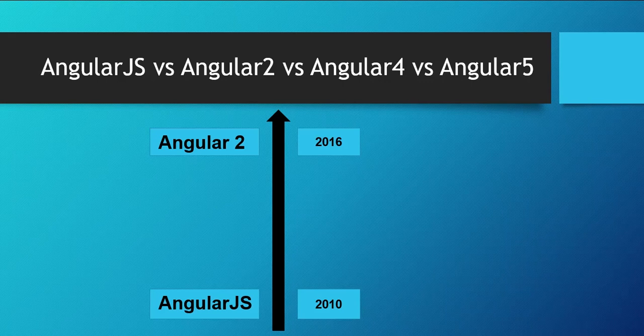So the Angular team decided to rewrite the original framework using TypeScript. TypeScript is a superset of JavaScript and it was written by Microsoft. The Angular team built a new framework using TypeScript, called Angular 2, which was launched in mid-2016. This new version of Angular is entirely rewritten from scratch and is entirely different from Angular 1.